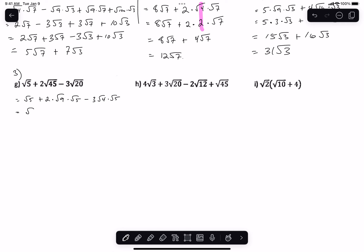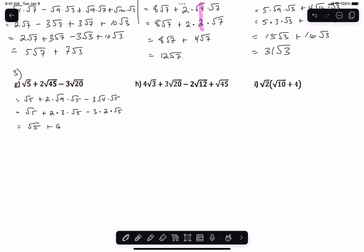So we're going to get the square root of 5, plus 2 times 3 times root 5, minus 3 times 2 times root 5. Let's clean it up — we get the square root of 5 plus 6 root 5 minus 6 root 5.